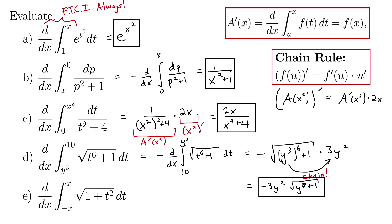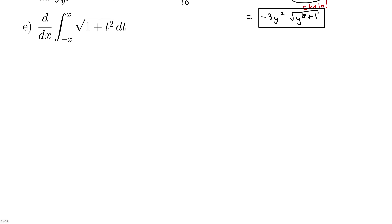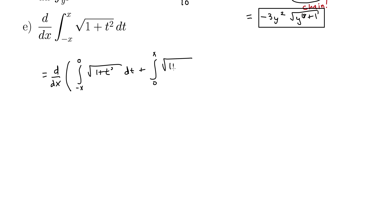On to part E. We have d by dx of the integral from negative x to x of the square root of 1 plus t squared dt. There's a trick to this. I know I'll use FTC part 1 since I have d by dx next to an integral. The key is to pick any number between negative x and x — let's choose 0. Using a property of integrals, we write this as the derivative of the integral from negative x to 0 of the square root of 1 plus t squared dt, plus the integral from 0 to x of the square root of 1 plus t squared dt. We then fix the first one by making it negative and swapping the limits to 0 to negative x.